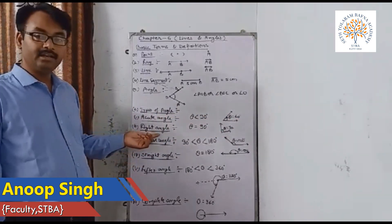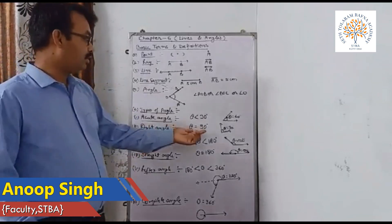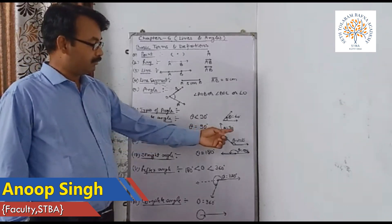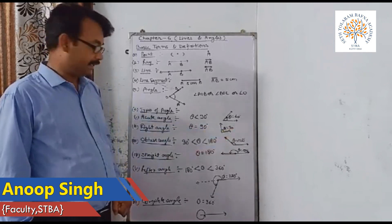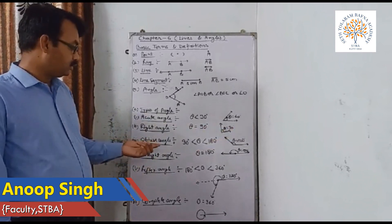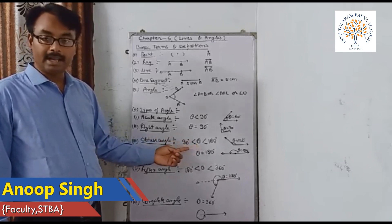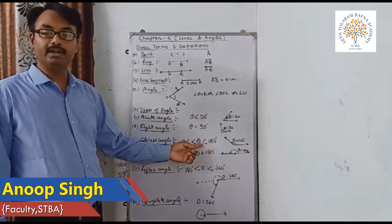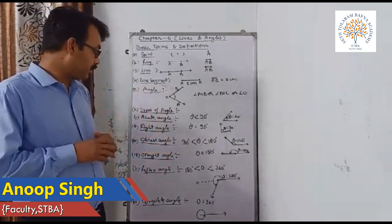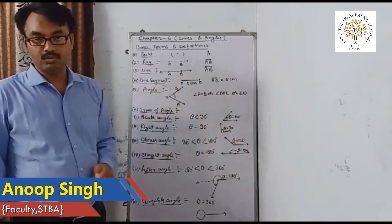Next is right angle: if an angle is exactly 90 degrees, it is called a right angle, so theta equals 90 degrees. Next is obtuse angle: an angle greater than 90 degrees but less than 180 degrees is called an obtuse angle. For example, theta equals 120 degrees.